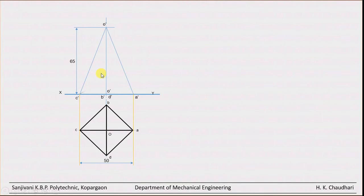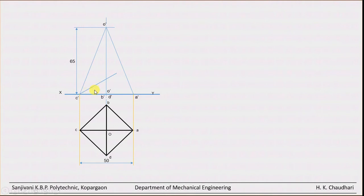Next is the inclination of the cutting planes. There are two cutting planes: one at the bottom at 30 degrees, and one at the top at 45 degrees. This cutting plane at the bottom is at an angle of 30 degrees to the base.